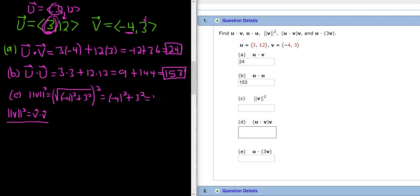Anyways, this is 16 plus 9, which is 25. So the magnitude of v squared is simply 25.